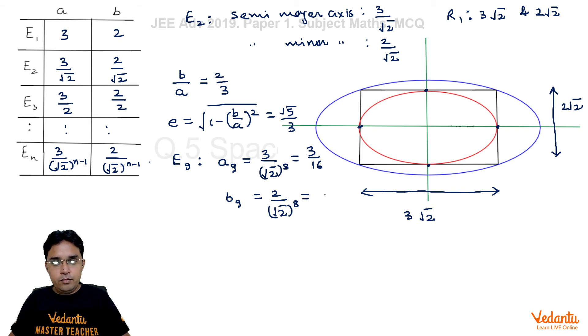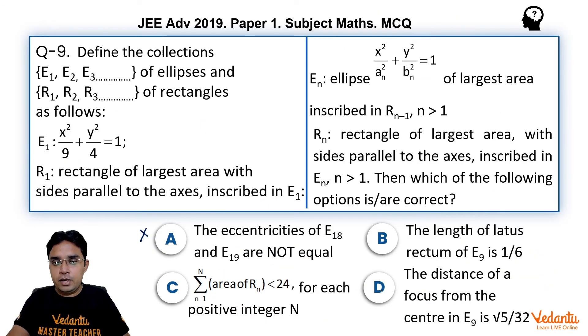So length of latus rectum, there is a formula 2b²/a, here it's 2b9²/a9. So let us put these values: 2 × (1/64) / (3/16). So if we simplify it we get this to be 1/6. So let us see what they have given. Length of latus rectum of E9 is 1/6, that is absolutely correct.